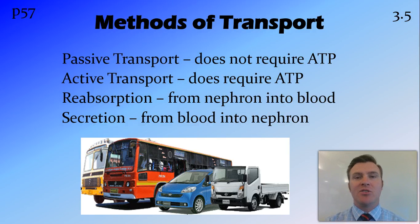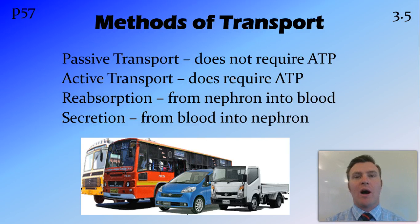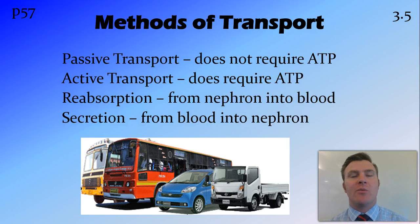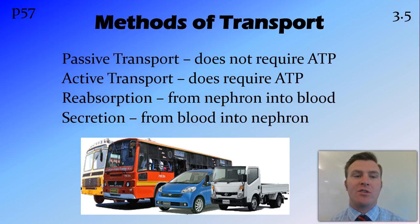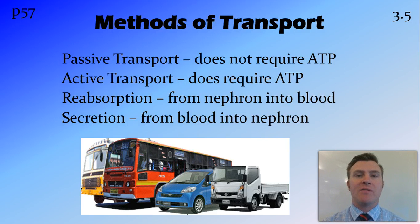We have passive transport, such as diffusion and osmosis, which does not require the use of energy or ATP. We also have active transport, which does require energy, because we're pushing molecules against the concentration gradient. We have reabsorption, which is movement of substances from the nephron into the blood, and secretion, which is movement of substances from the blood into the nephron.